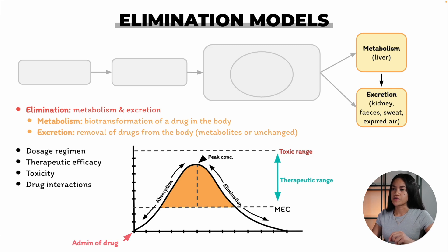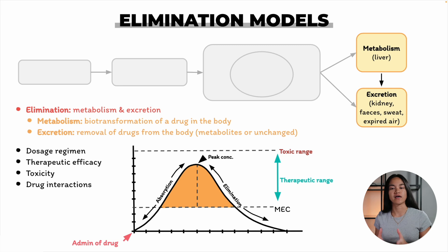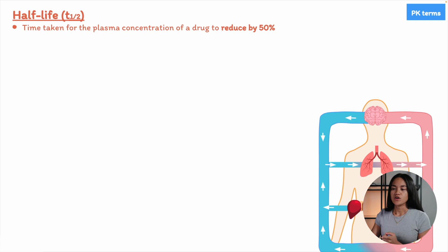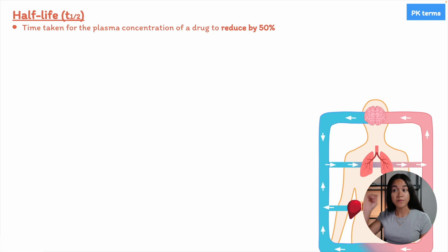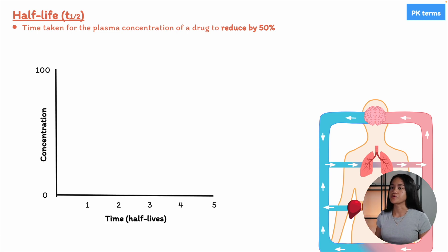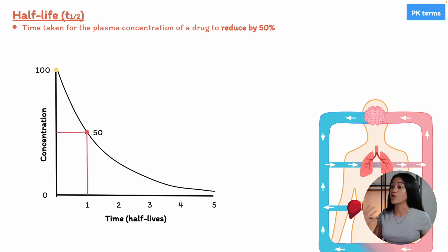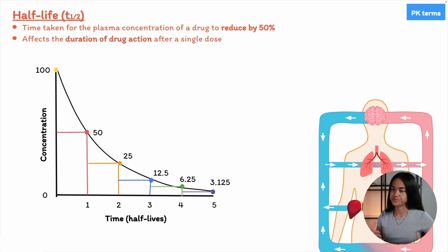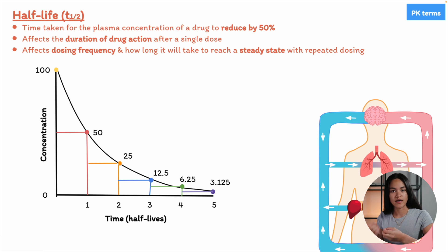Let's review some key pharmacokinetic terms covered in earlier lectures — a quick refresher. First, let's talk about half-life. The half-life of a drug is the time required for the concentration of the drug in the plasma to reduce by half. It's a crucial parameter because it gives us an idea of how long a drug stays active in the body, and it's important for determining dosing intervals and the duration of drug action.